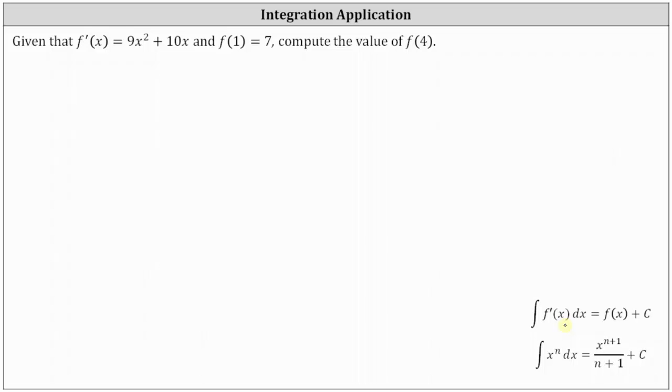From there, because we know f(1) = 7, we can determine the value of c. And then once we find the value of c, we can compute f(4). So the first step is to integrate 9x² + 10x with respect to x.